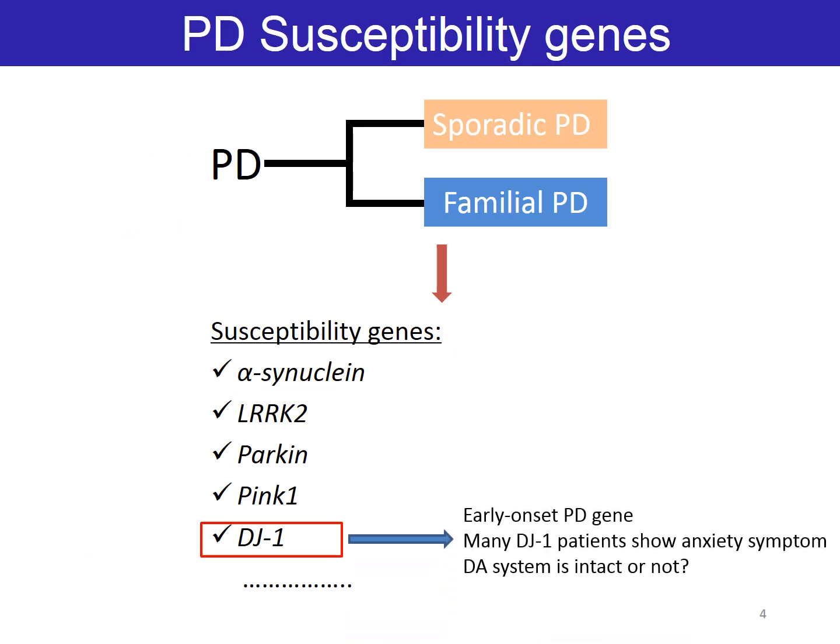To study the mechanism of PARK7 pathogenesis, PARK7 knockout mice have been generated by different groups and show progressive motor deficits. But it is unclear whether non-motor symptoms occur at an early stage.